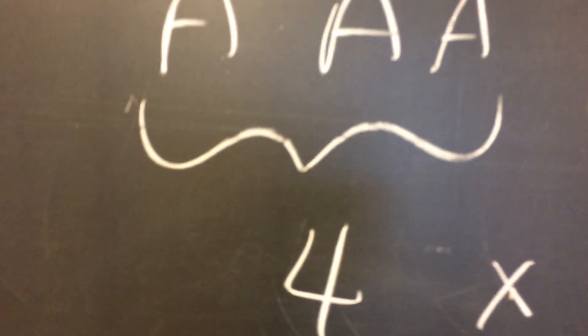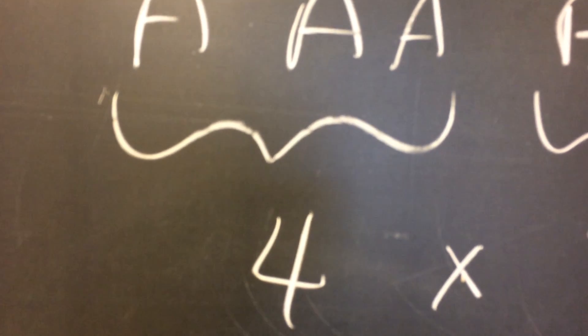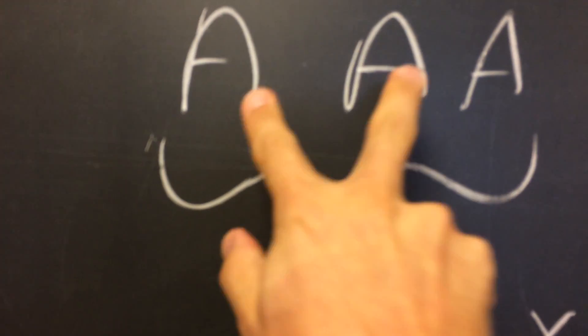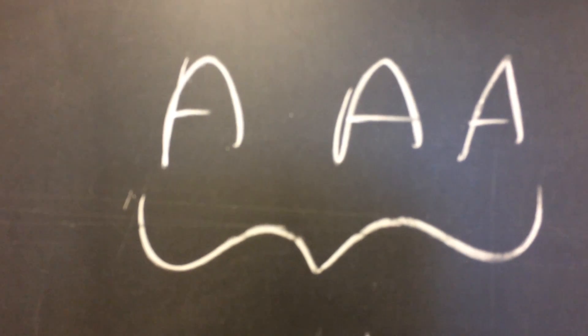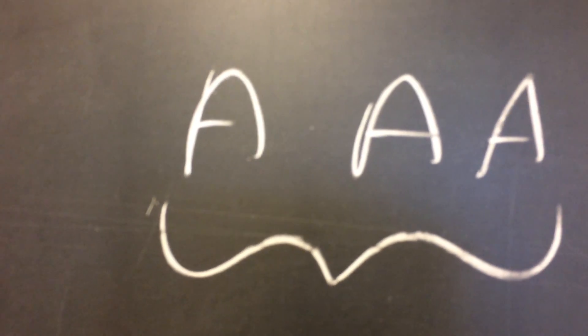But sometimes we have multiple things, like maybe I have three A's, two B's, and a C. Well, in that case, there are four choices for A. I could pick one, two, three A's, or I could pick no A's. Zero, one, two, or three is four choices.